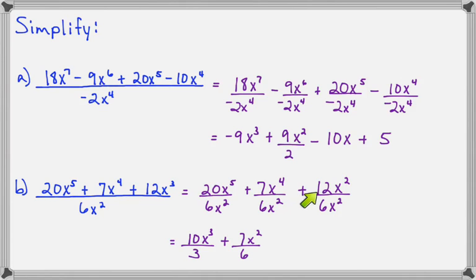And, on the last term, 12 divided by 6 is 2. And, x to the 2nd divided by x to the 2nd is x to the 0. And, that's 1. So, we'll have 2 times 1, which is 2.